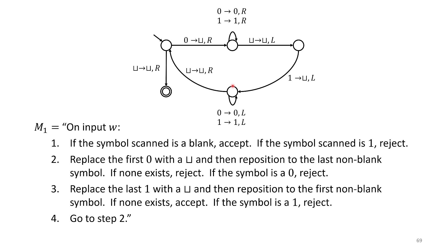Then reposition back to the first non-blank symbol — that's what the loop did. Again we're describing in pseudocode and natural language how the machine is going to work and how the tape head moves back and forth. If none exists we should accept; if the symbol is a one we should reject. Then go back to step two. This pseudocode describes the functioning of the state machine once we're familiar with the operations it can perform.